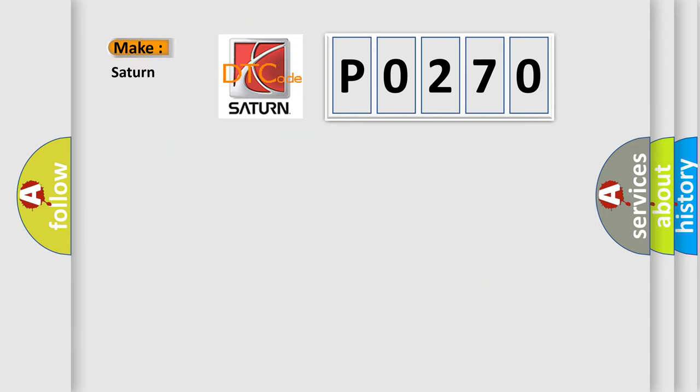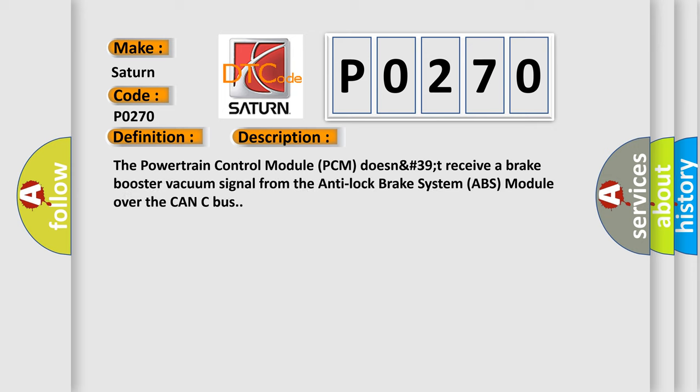So, what does the diagnostic trouble code P0270 interpret specifically? The basic definition is Lost brake booster signal. And now this is a short description of this DTC code. The powertrain control module PCM does not receive a brake booster vacuum signal from the anti-lock brake system ABS module over the CAN-C bus. This diagnostic error occurs most often in these cases.